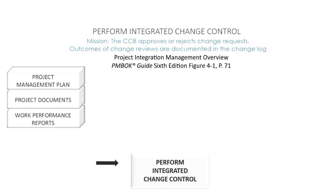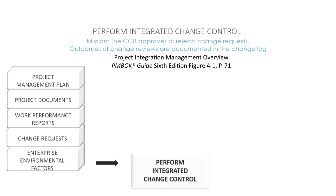The next input is work performance reports, which tell you about the health of the project. The next input is change requests — since we're reviewing change requests, they must be an input to this process. The remaining inputs are enterprise environmental factors and organizational process assets, which we won't delve into further.